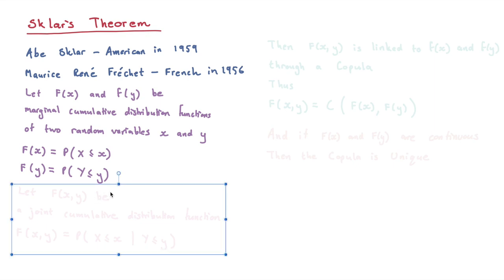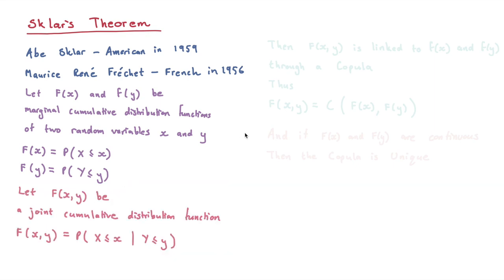Then it says, let F(x,y) be a joint cumulative distribution function, such that F(x,y) is equal to the probability of x less than x, given that y is less than y.